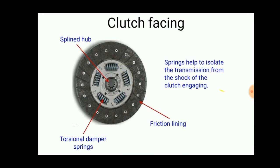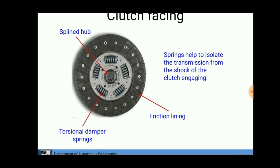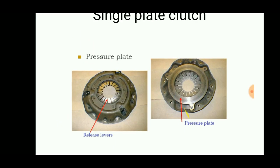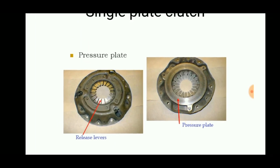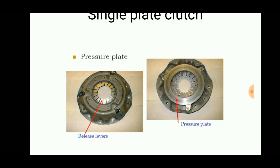This is the clutch facing. It consists of a friction lining, torsional damper springs for vibration damping, and a splined hub so that the shaft can be placed in it. The springs help isolate the transmission from the shock of clutch engagement. The pressure plate has release levers present inside it.